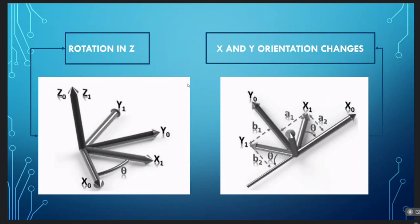We are looking for the way to represent the rotation of system 1 with respect to system 0 based on the angle that differentiates them. For this, it is necessary to know the components of the H vector along the X and Y axes. In the figure, A1 and A2 are components on X1, and B1 and B2 are the components of Y1. The sum of these components is the way in which the new orientation of an axis is represented. Since it is a rotation in Z, Z1 is equal to Z0, so only X and Y have changed their rotation.